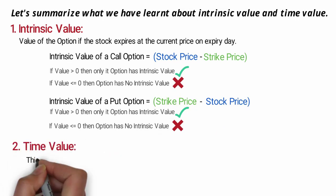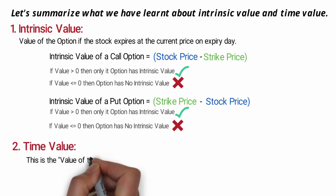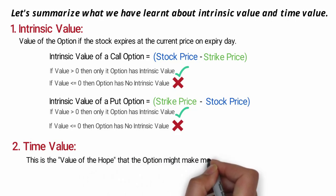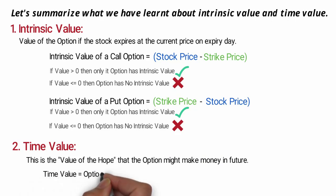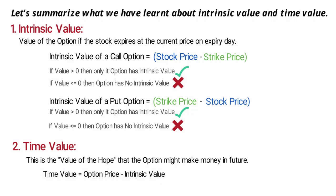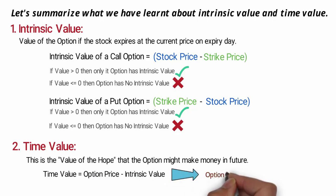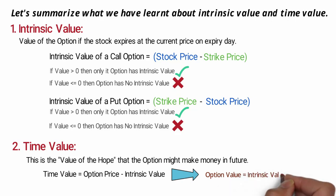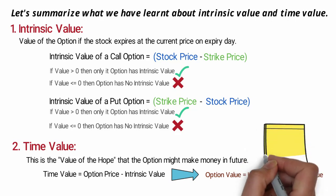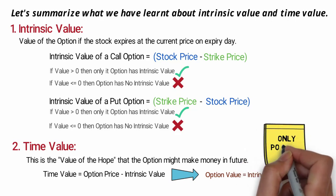Number two — time value: this is the value of hope that the option might make money in the future. Time value equals option price minus intrinsic value. That's how we can say option value is the summation of intrinsic value and time value. Note that the intrinsic value and time value can never be negative.